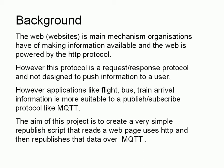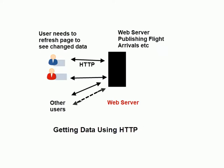I did do an earlier video where I used Python to republish the data. In this video I'm going to be using Node-RED to republish the data. So this is a normal interaction — we've got a user who talks to a web server using HTTP, and the problem with the HTTP protocol is that when the information changes, the only way the user can see that information has changed is to refresh the web page.